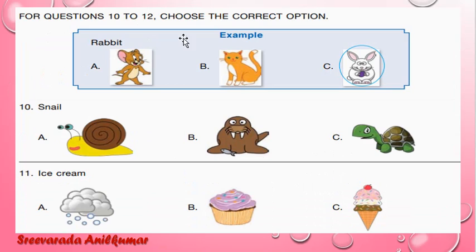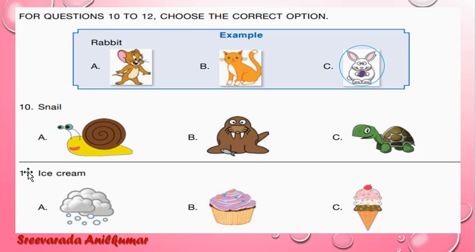Next one: Choose the correct option. Snail — this is a walrus, this is a tortoise, this is a snail. A is the correct answer. Eleventh one: Ice cream — this is a snowstorm, this is a cupcake, this is an ice cream. C is the correct option.